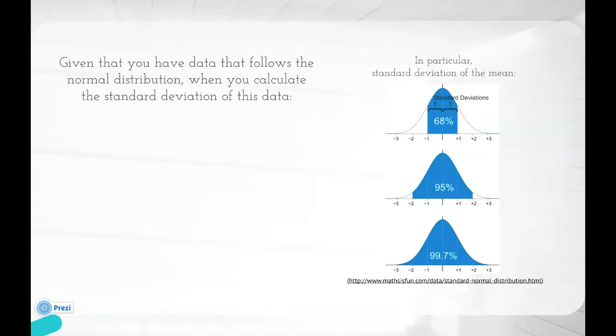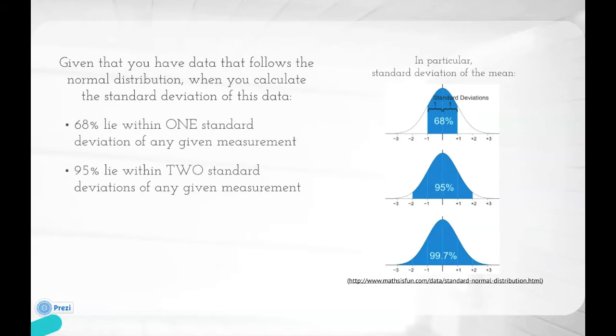Given that you have data that follows the normal distribution, when you calculate the standard deviation of this data, 68% lie within one standard deviation of any given measurement, 95% lie within two standard deviations of any given measurement, and 99.7% lie within three standard deviations of any given measurement.